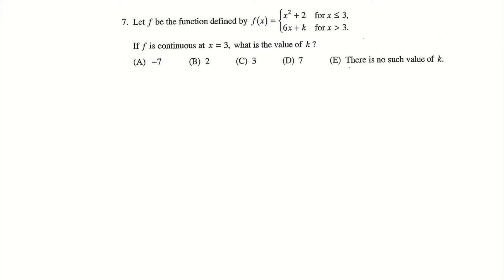So in this one, they have a piecewise function and says if f is continuous at x equals 3, what is the value of k? Now really, all this problem is going to boil down to is x squared plus 2 must equal 6x plus k when x is equal to 3. But why is it like that? I want to take the time to talk about the three points of continuity here because it's important to know these three points as you do the AP test because they will test you on them in various ways throughout the test.